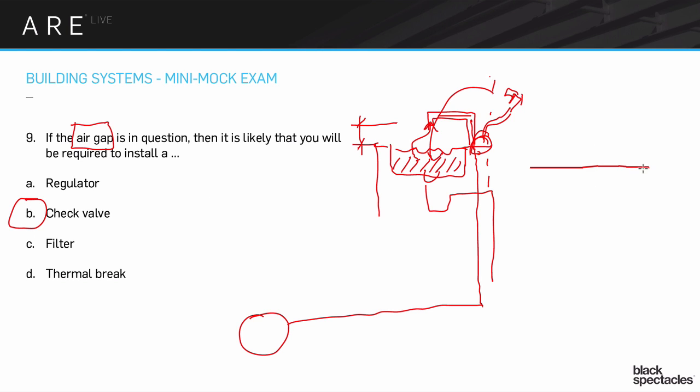So a check valve is somewhere in that pipe. It's going to be a little device, and that device is going to be set up a little swinging door if you will. And when the water is going this way, that water goes right on through. But if for some reason there's suction and it starts pulling the water the other direction - and that actually happens fairly regularly - imagine that a fire truck pulls up next door to your building and there's a house on fire down the block and they're pumping all this water out of the fire hydrant.